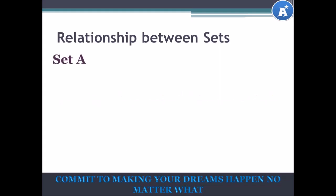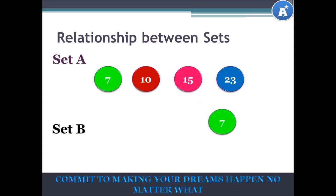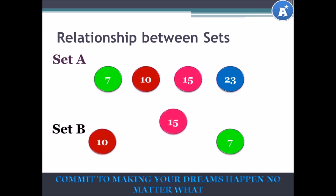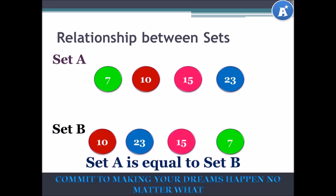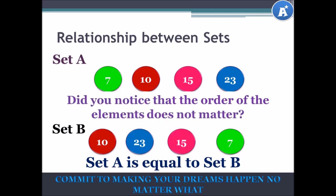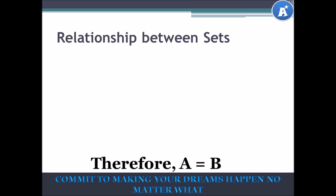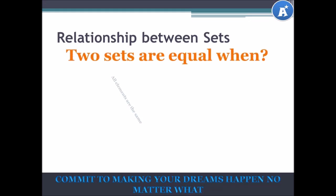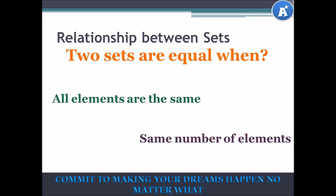Relationship between sets. Set A = {7, 10, 15, 23} and set B = {7, 10, 15, 23}. Do you see that set A and set B both have the exact same elements? Then we can say that set A is equal to set B. Did you notice that the order of the elements does not matter? Therefore, A = B. Two sets are equal when all the elements are the same and they have the same number of elements.